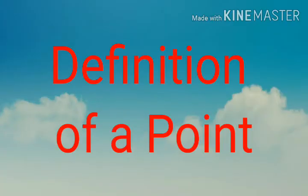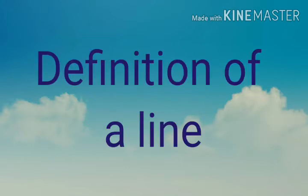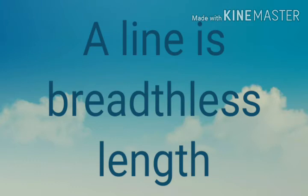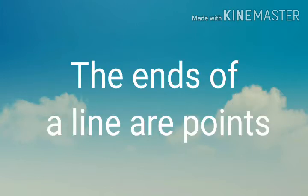The first definition: a point is that which has no part. This is the definition of a point given by Euclid. Then the second one is the definition of a line, that is: a line is breadthless length. The third statement is: the ends of a line are points.